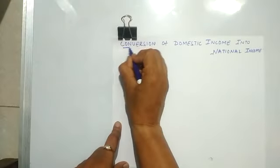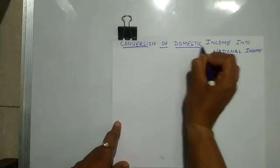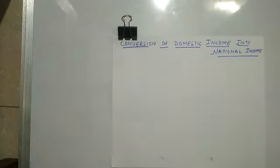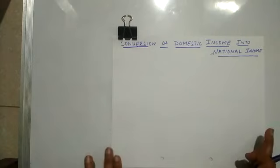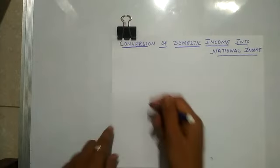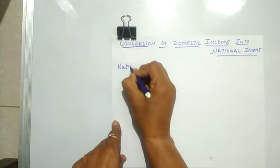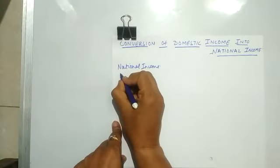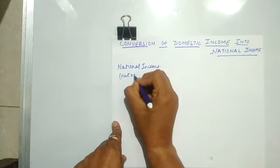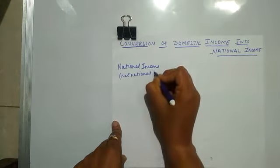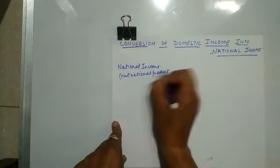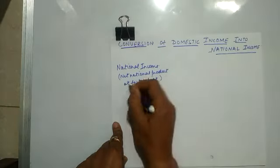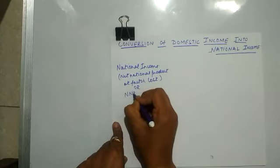The next topic is conversion of domestic income into national income. There is a problem. National income is known as net national product at factor cost, or we can write it as NNPFC.